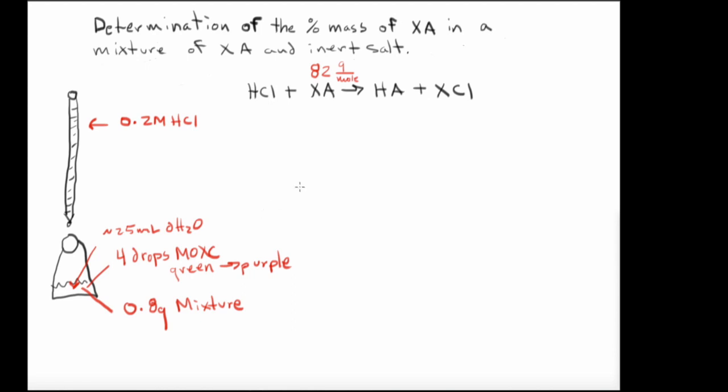Okay. So back to our example. And let me go ahead and change the coloration here. So what's going to happen is we're going to run the titration. So we have 25 mLs of DH2O, four drops of Moxie indicator.